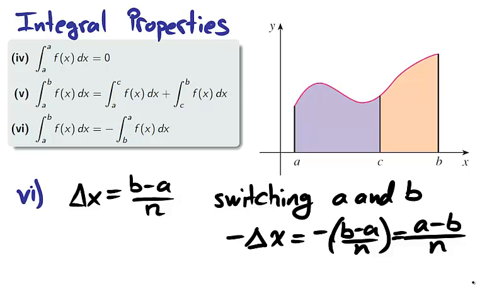In the spirit of playing with the bounds of an integral, if we reverse the bounds of integration, say we now integrate from b to a rather than a to b, we will be calculating the negative of the original integral. This is due to the fact that Δx is (b-a)/n. This becomes negative Δx when we switch the order of integration.